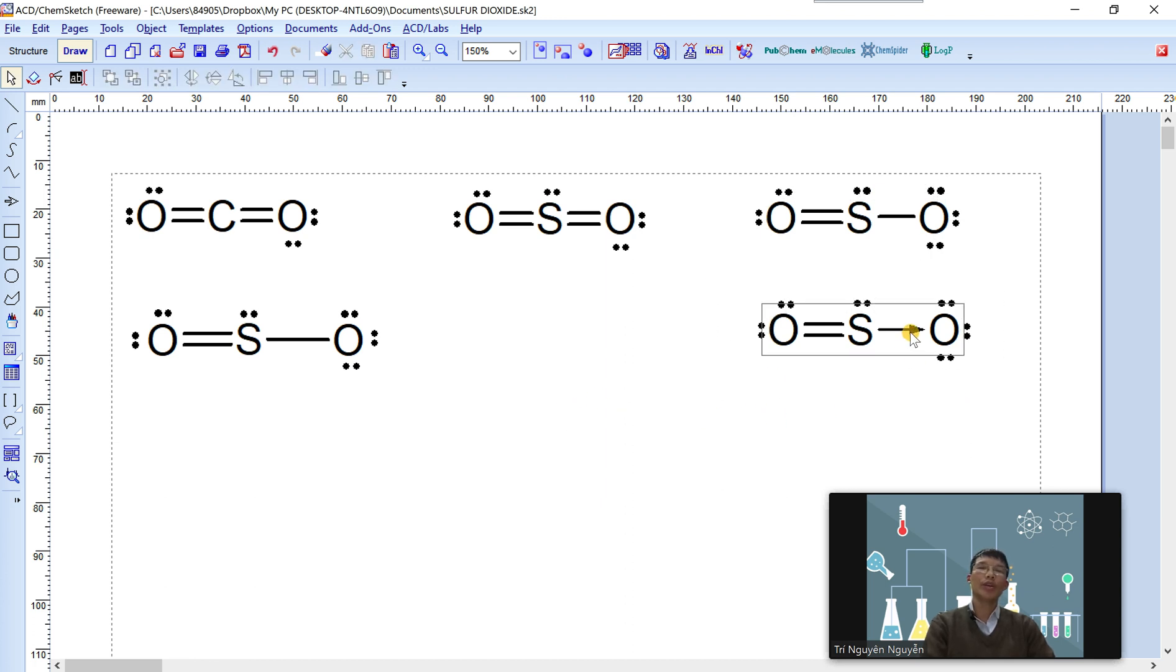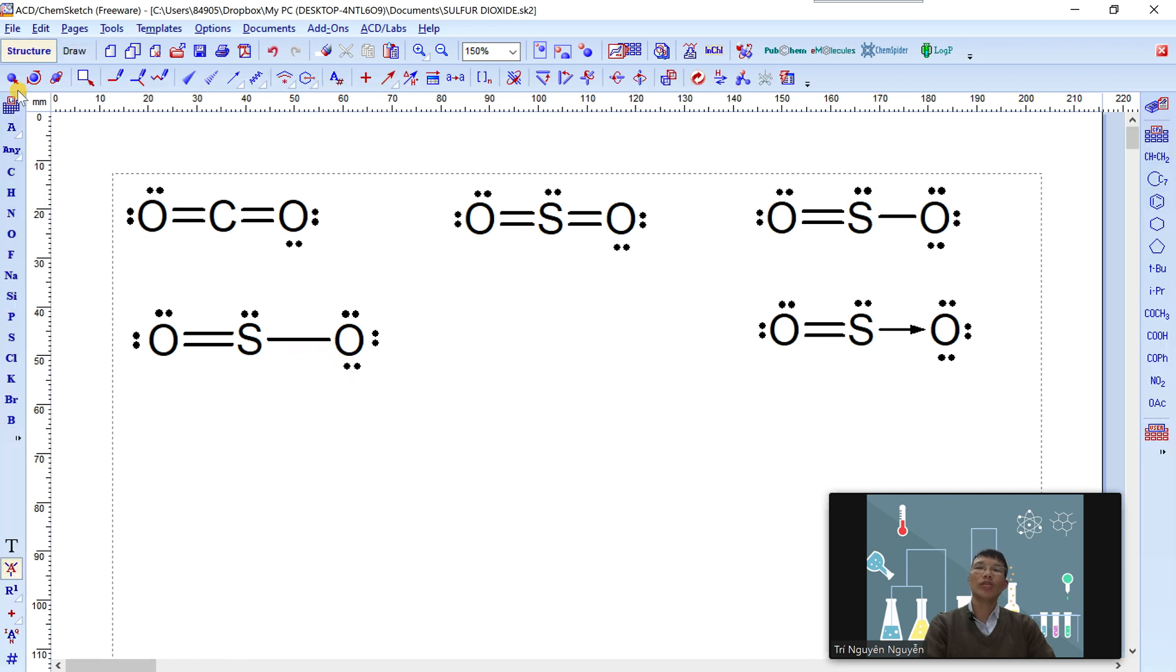In this case we need to draw a coordinate bond, so we can do it by changing this bond. Yeah, this single bond to a coordinate one. Just for convenience, copy this Lewis dot structure.